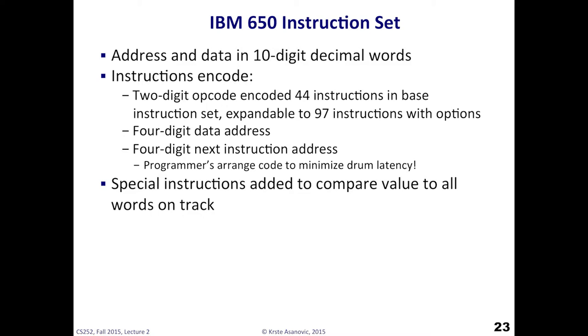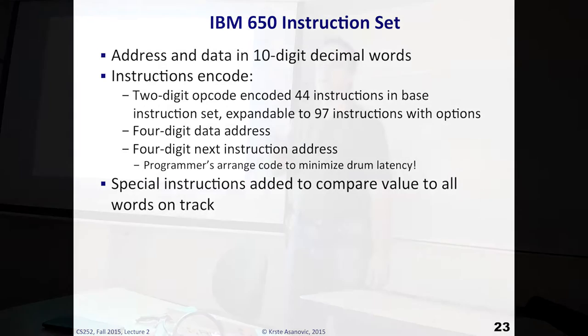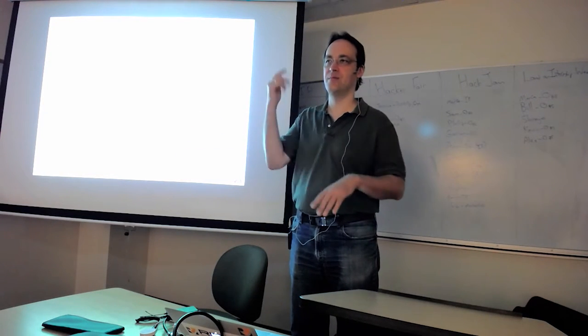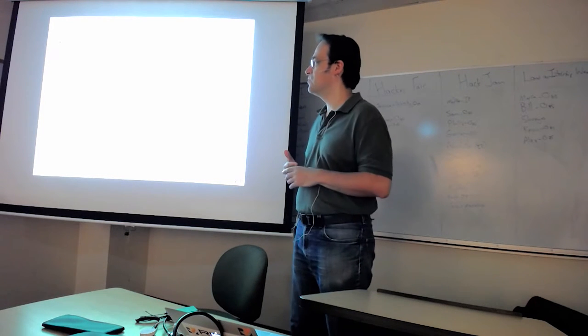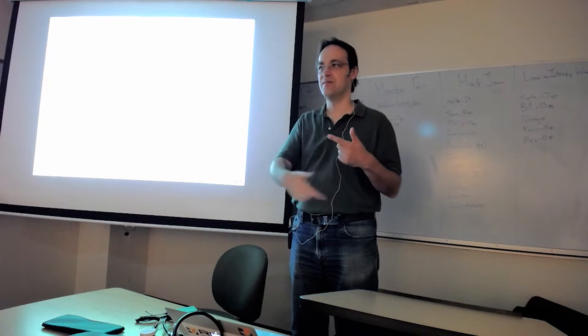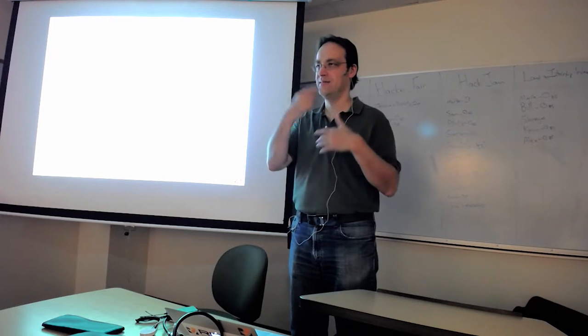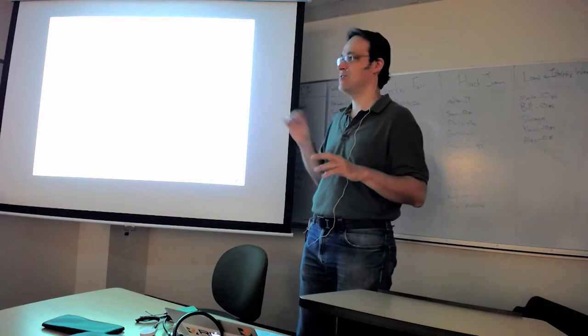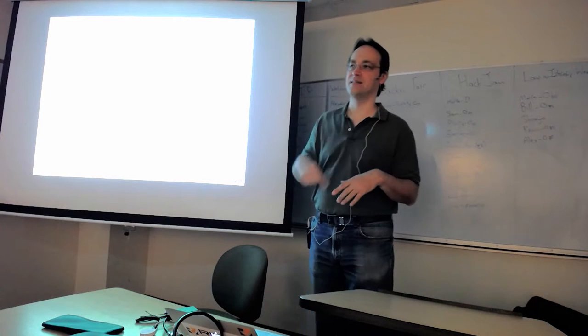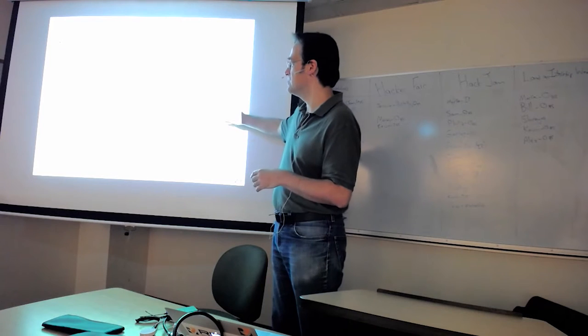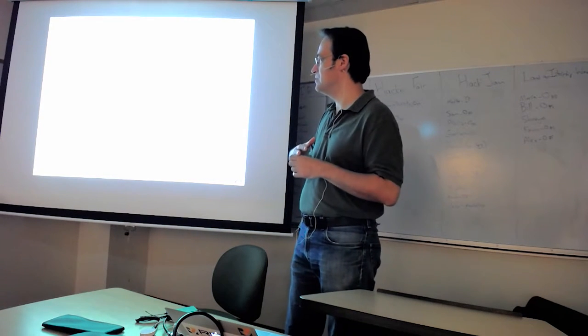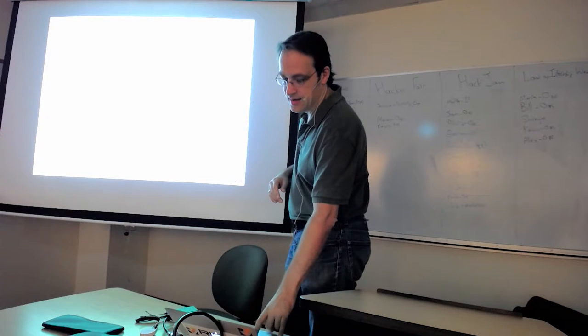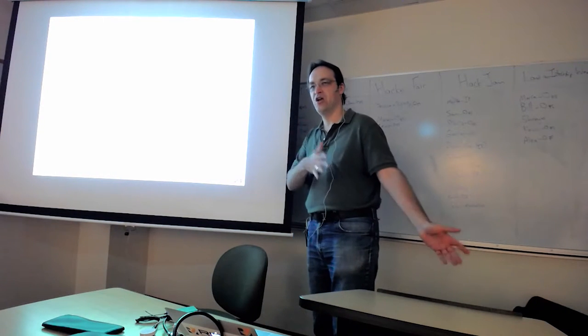The instructions had a two-digit opcode, 44 instructions. They had optional expansion to 96, 97 instructions. They had instruction set extensions. A four-digit data address, four-digit next instruction address. So every single instruction not only had the address of the data you would operate, but also the address of the next instruction. So every instruction did a jump to another instruction. And the reason they did this was you would lay out the instructions on the drum so that once you finished processing one instruction, the next instruction would be close by and you could read it from the drum head. Otherwise, you have to wait for the drum rotational latency to come around. So when you're writing code for this machine, you're planning the instructions according to where and putting them in memory so they'd be in the right place at the right time as the drum span around.